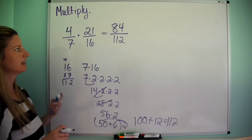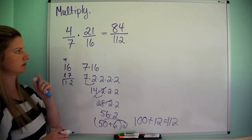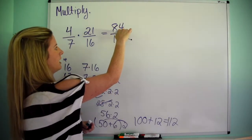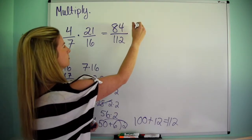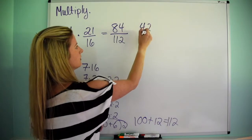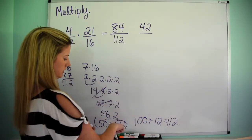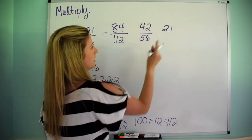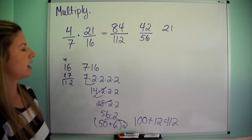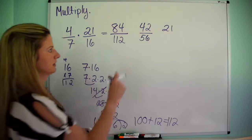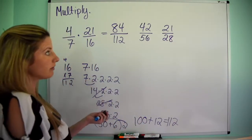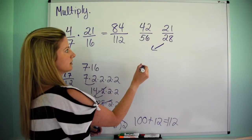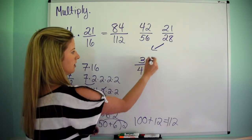So we get 84 over 112. That is not reduced, so let's reduce that. They're both divisible by 2: 84 divided by 2 is 42, over 112 divided by 2, which is 56. They're both even again, so divide by 2 again: that gives us 21 over 28. Those are both divisible by 7. So 21 divided by 7 is 3, and 28 divided by 7 is 4. Boom — 3 fourths.